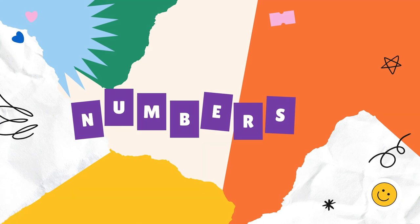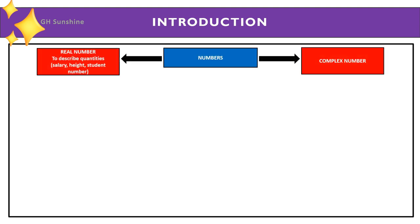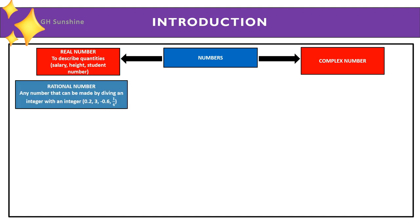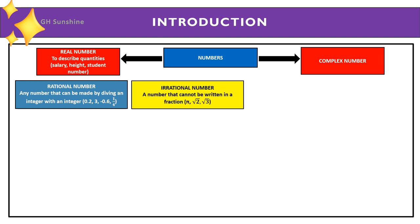Assalamualaikum and hi everybody. The first topic is all about numbers. There are two types of numbers: real numbers and complex numbers. Real numbers are used to describe quantities, for example salary, height, and student number. Complex numbers cannot describe quantities.